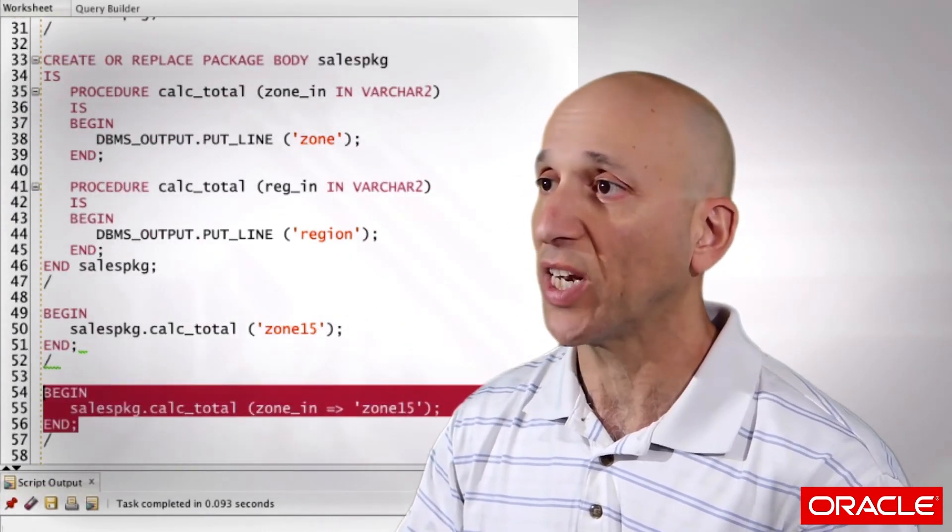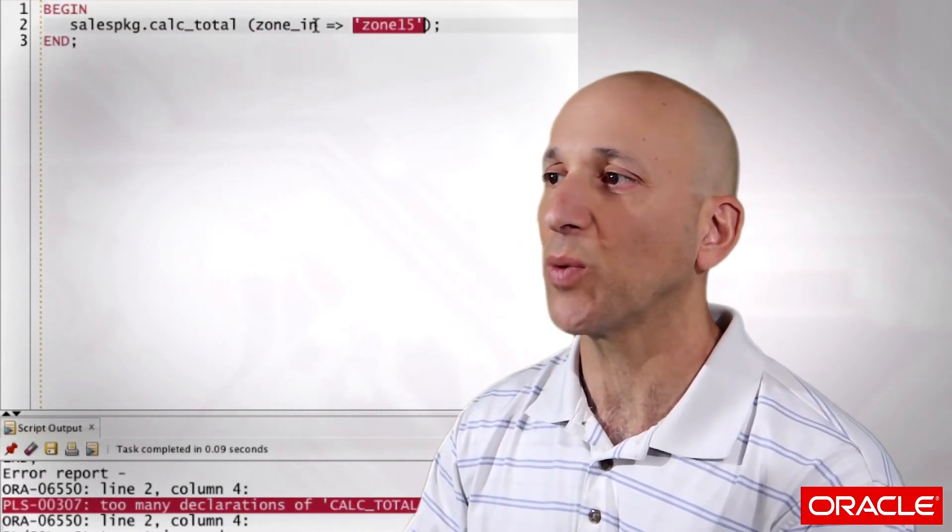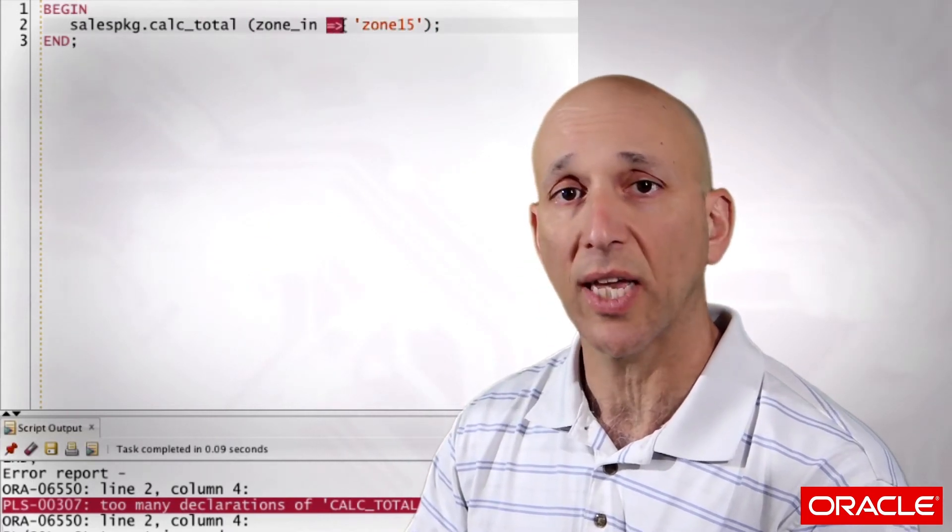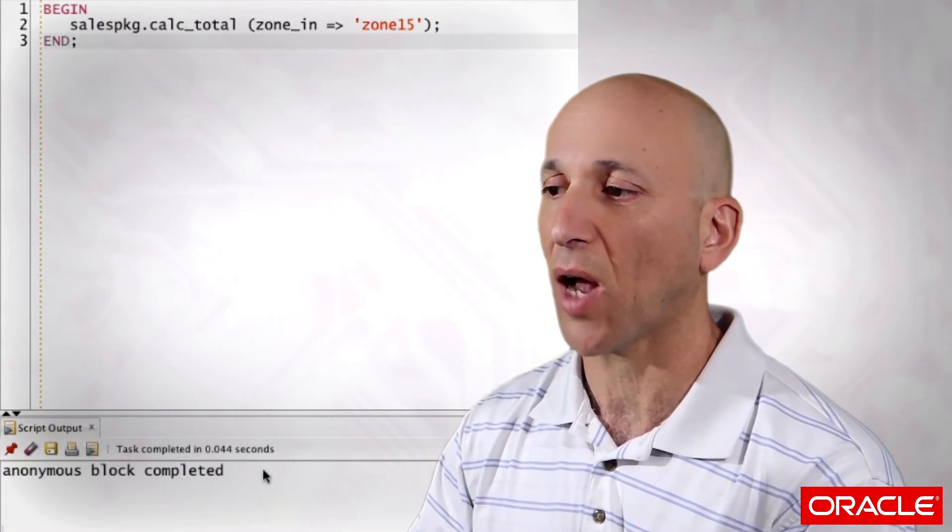However, if I switch to name notation, now I'm explicitly saying this string goes with this parameter, the zone_in parameter, using my association symbol equal greater than. Then I can run my code. No problem.